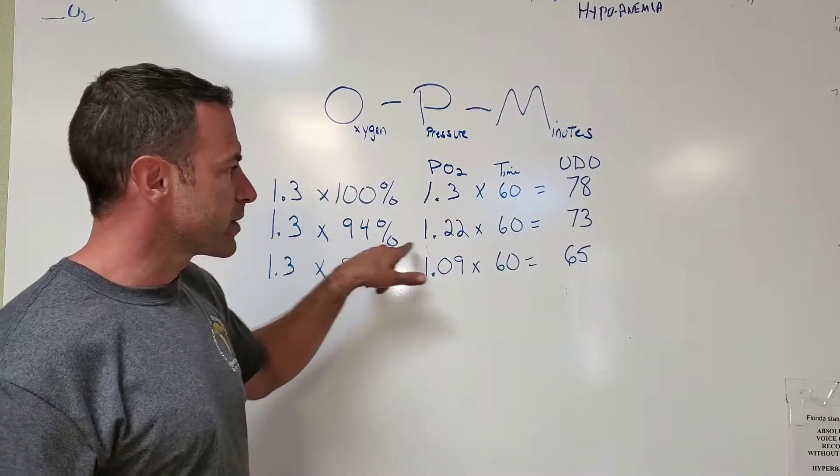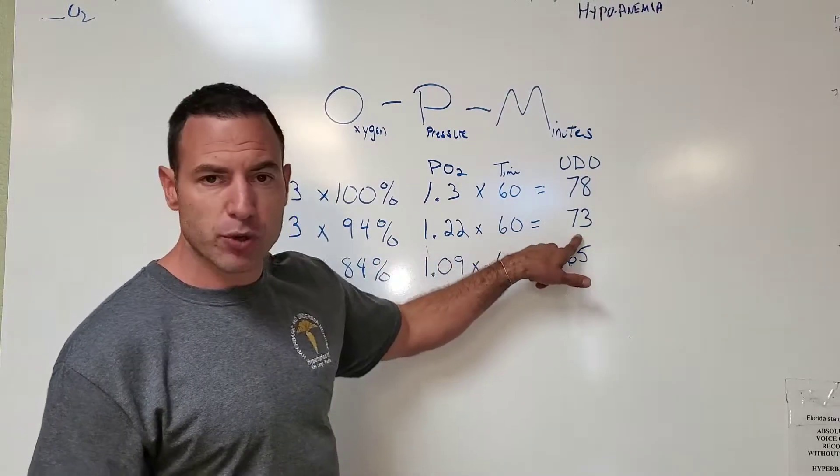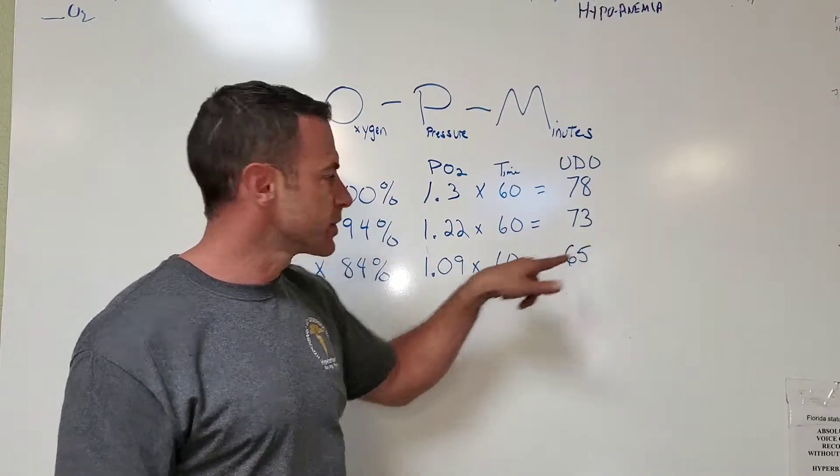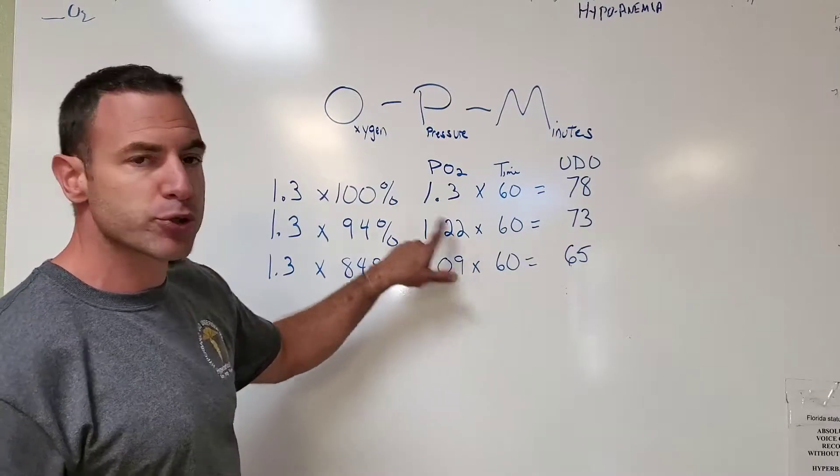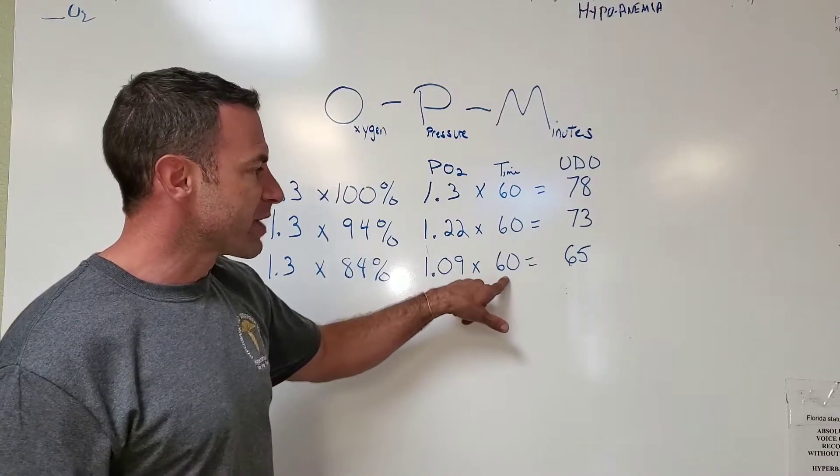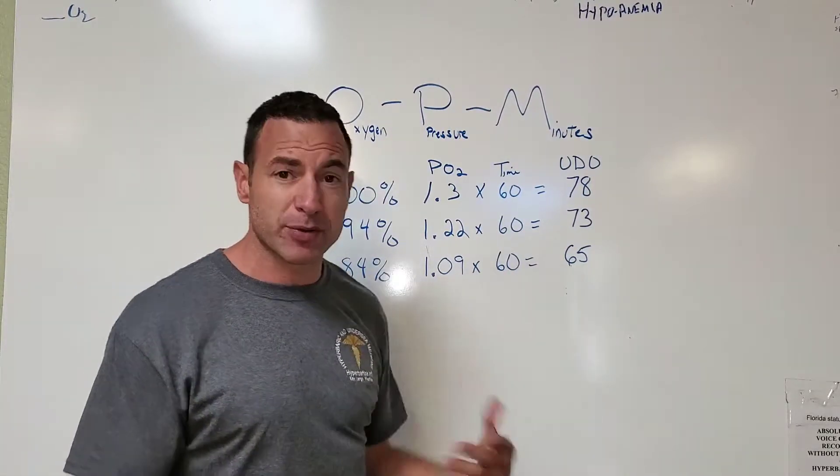If you're at 94%, 1.22, you're going to have a dosage of about 73 units. And if you have 1.3 and 84%, so a PO2 of 1.09, you're going to have a full dosage at 60 minutes of about 65.